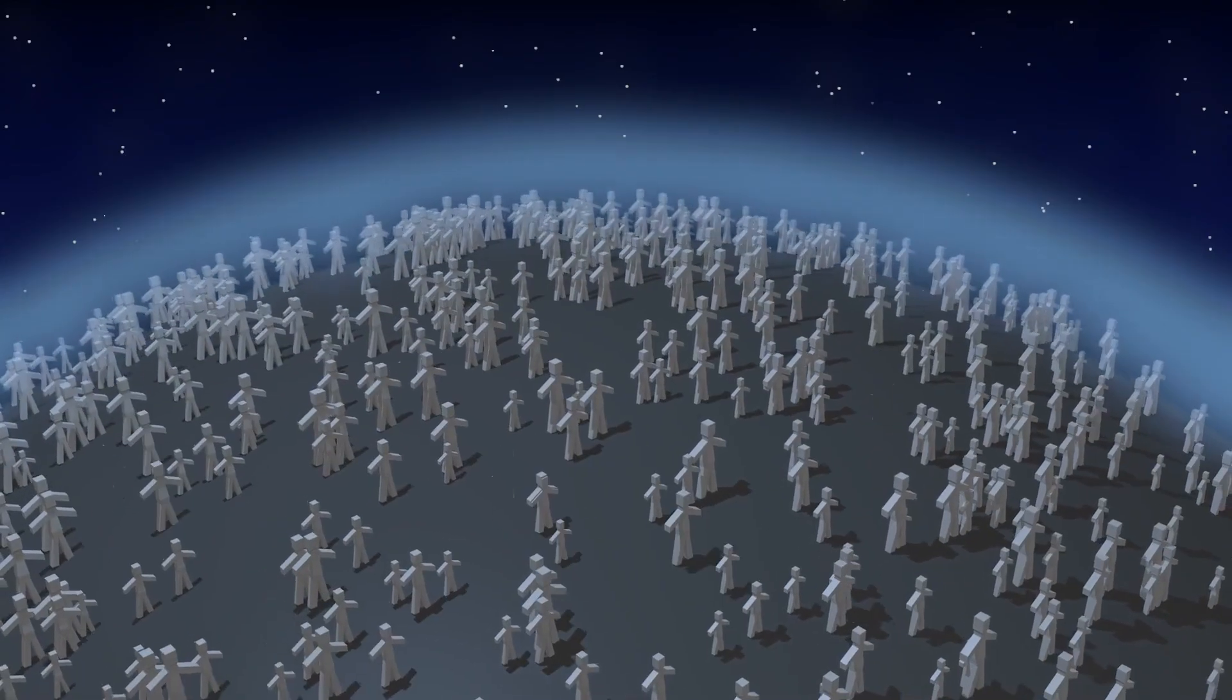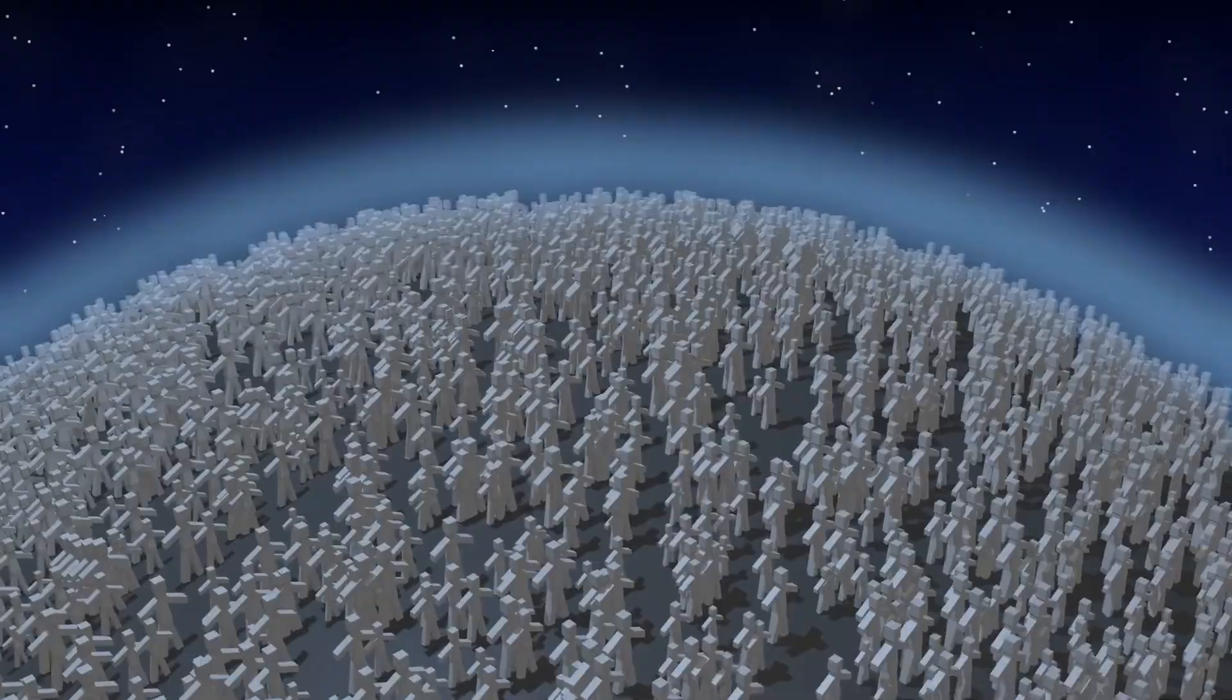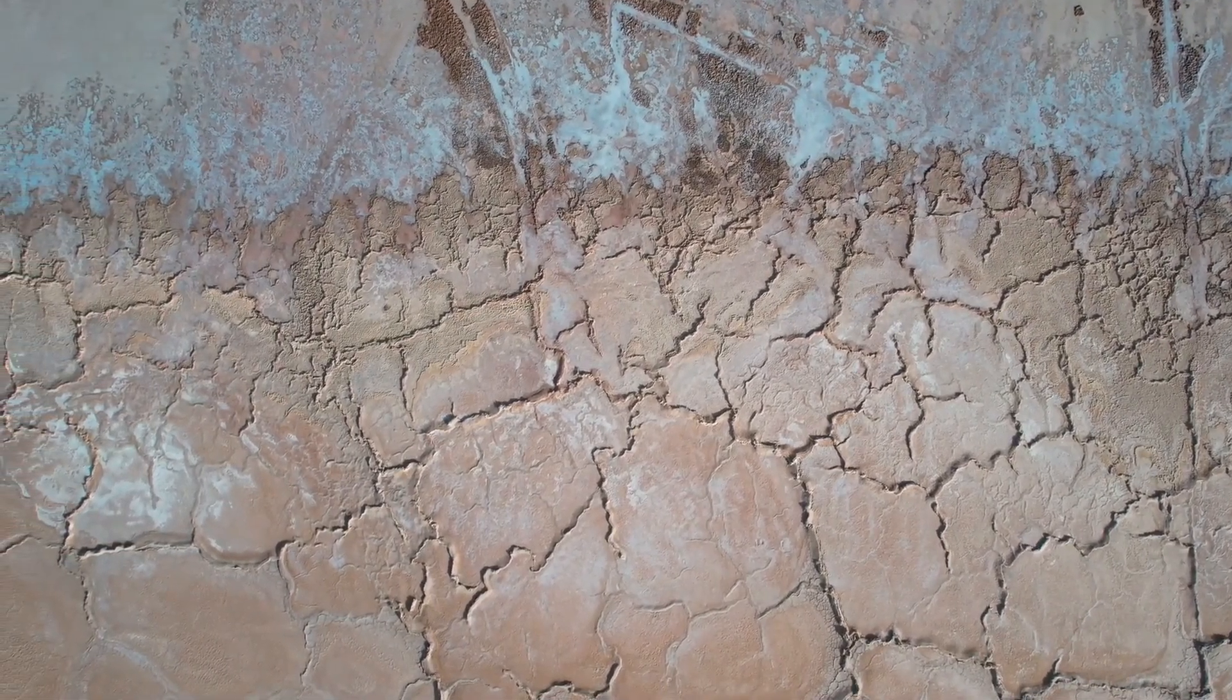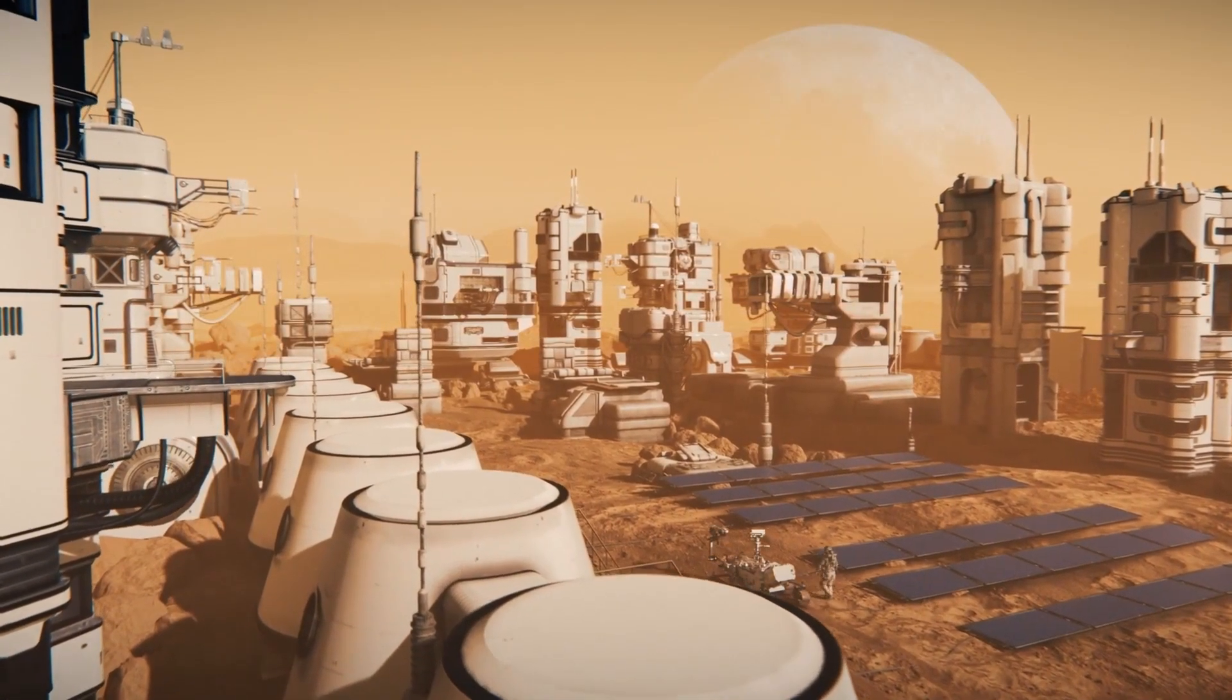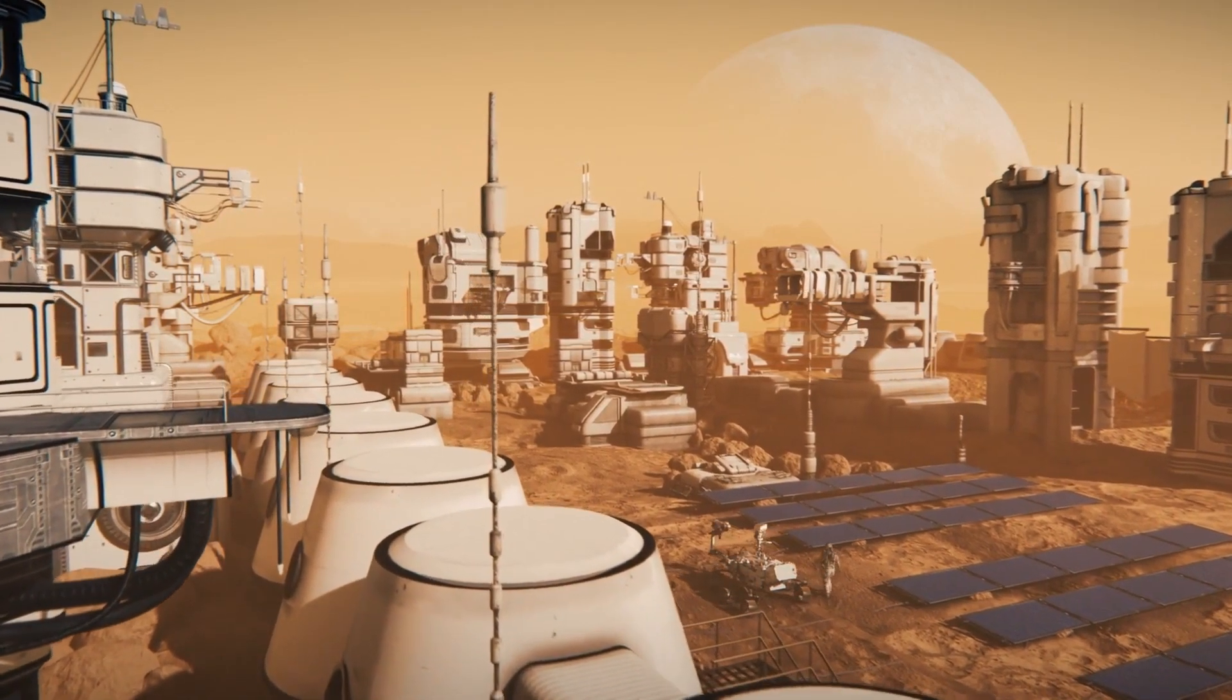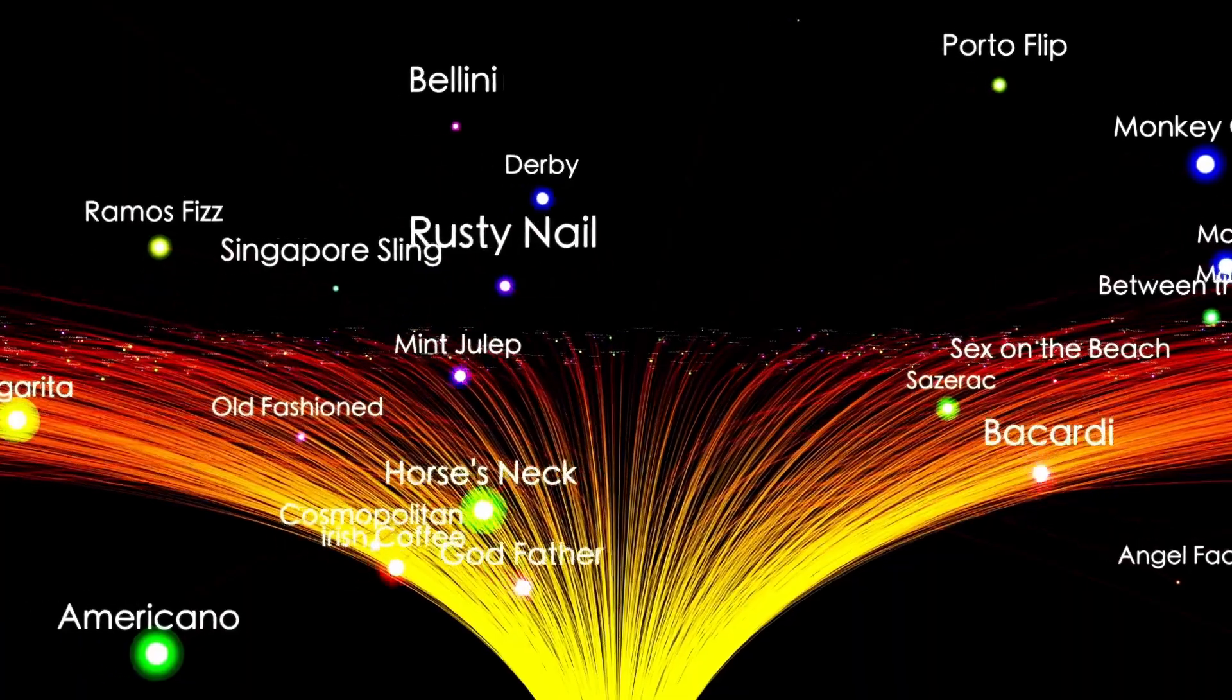Some speculated it could be a beacon. A repeating broadcast intended for receivers, not of earthly origin. Others theorized it could be telemetry. A constant data stream sent back to wherever this object came from. The unsettling part was this. Whatever the message was, it hadn't changed since Webb first detected it. It was as if 3i Atlas wasn't trying to talk to us, but to someone else. And maybe that someone had already heard it.